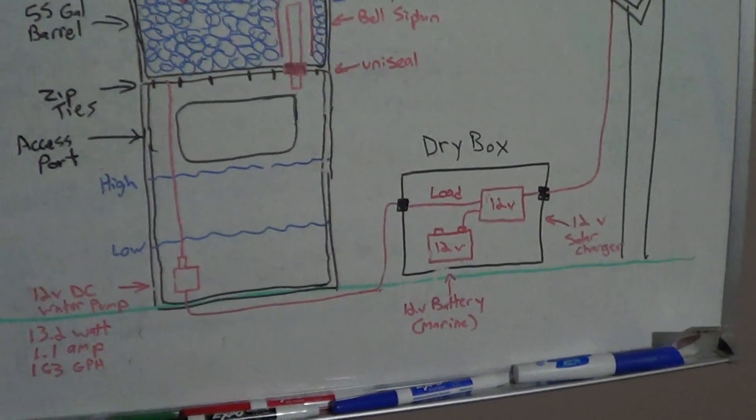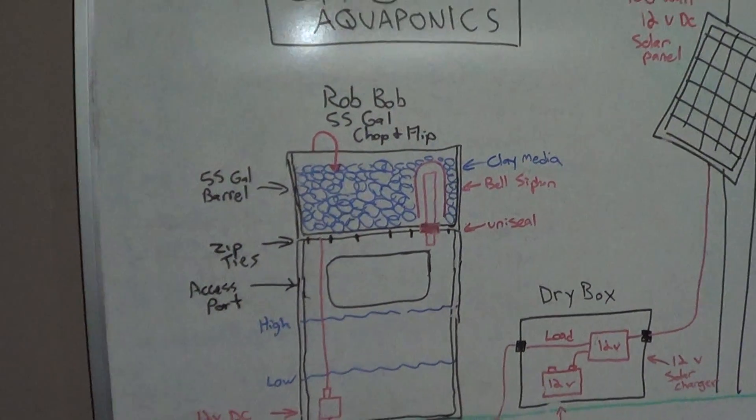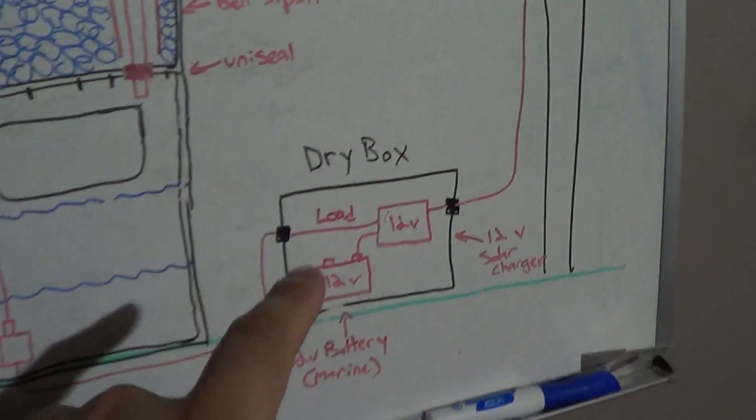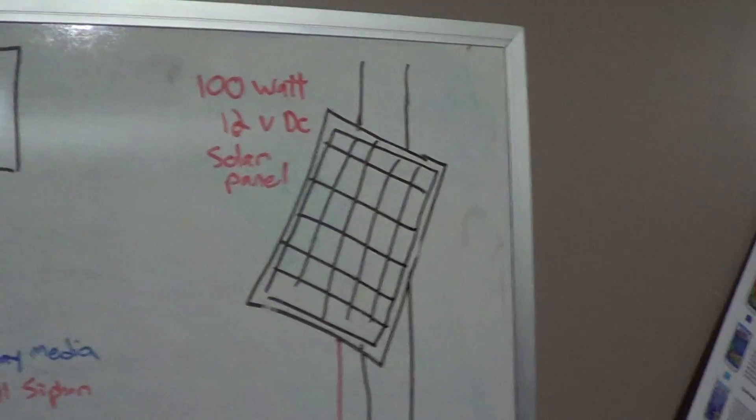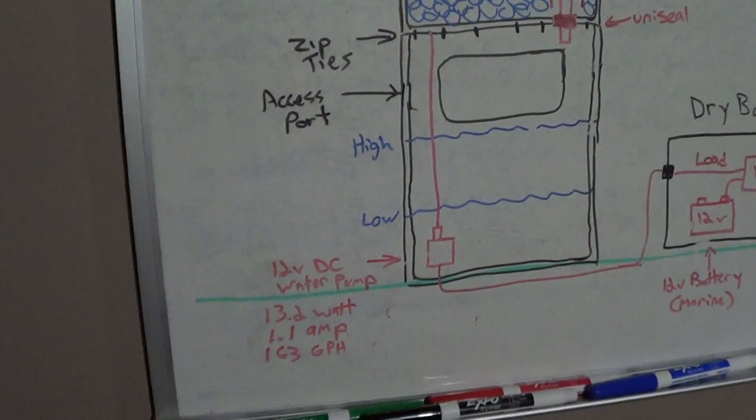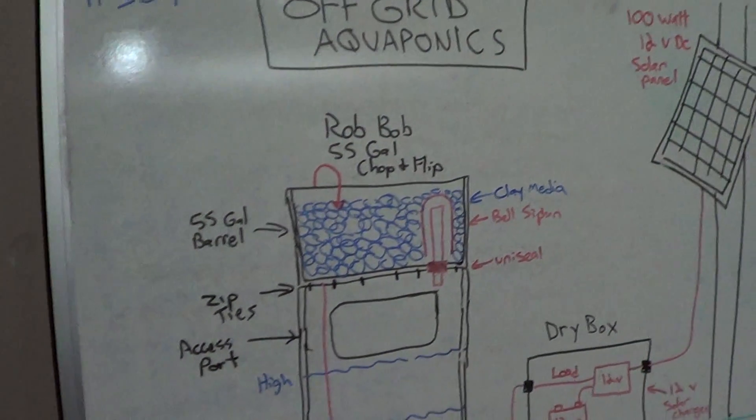So that is the complete system in a nutshell. Again I could add an air pump to this. I have oversized the battery and the solar panel so I could add a second barrel maybe even a third barrel to a system like this. But again this is just the quick plan, the quick schematic.